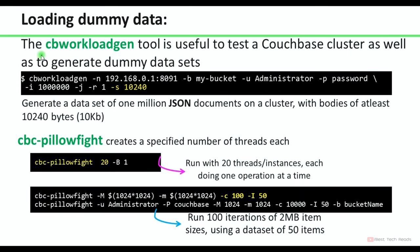Loading dummy data — the CB workload gen tool is useful to test the Couchbase cluster and to generate a dummy data set. You can use it for performance tests and stress testing. This command generates a set of 1 million JSON documents on the cluster with a size of at least 10 to 40 bytes. CBC pillow fight creates a specified number of threads — this command will run with 20 threads. The below command runs 100 iterations of 2 MB item sizes using a dataset of 50 items.